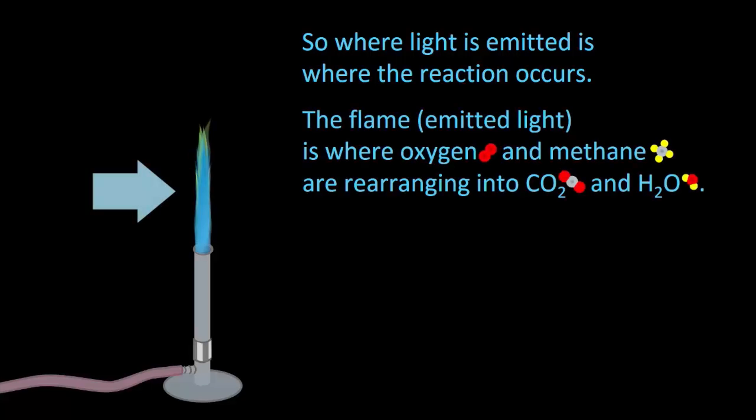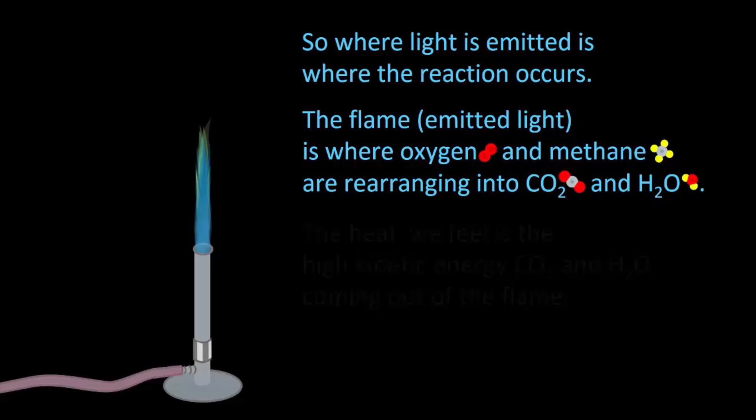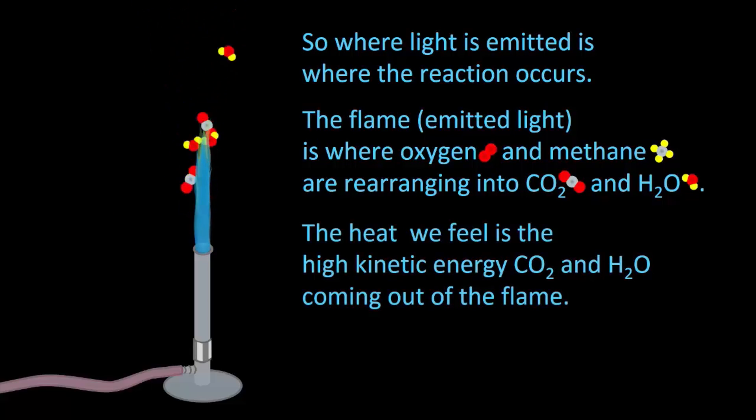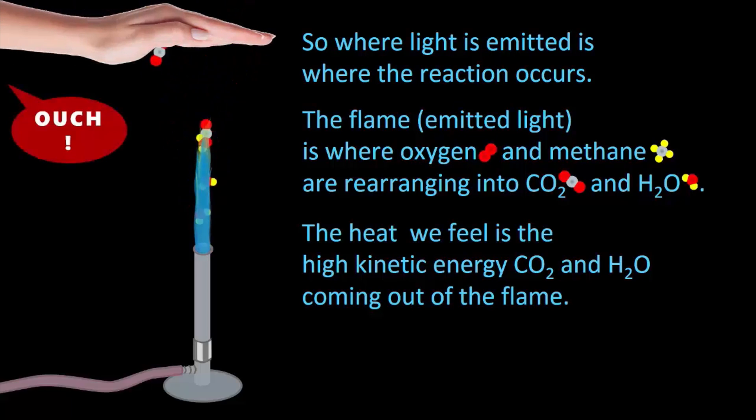So where light is emitted is where the reaction occurs. The flame, the emitted light, is where oxygen and methane are rearranging into carbon dioxide and water. The heat we feel is the high kinetic energy, CO2 and H2O, coming out of the flame. Our nervous system gets upset when those high-speed particles hit our skin, transferring their kinetic energy to the molecules in our skin.